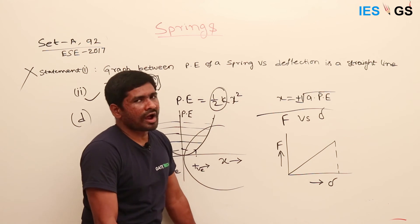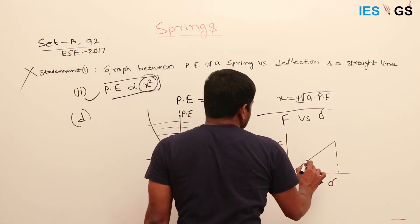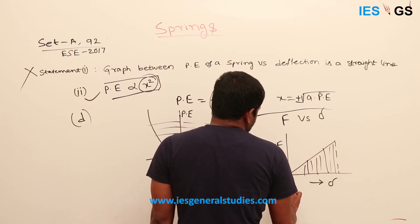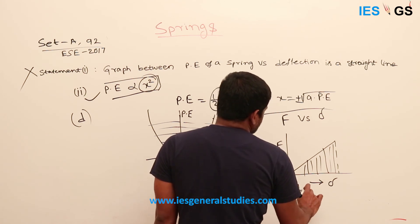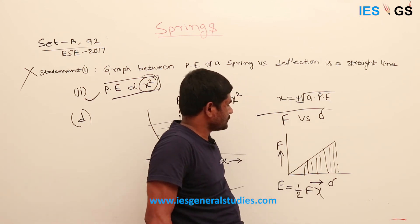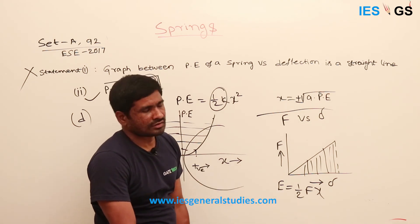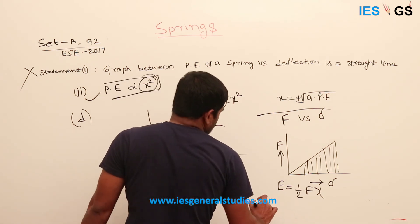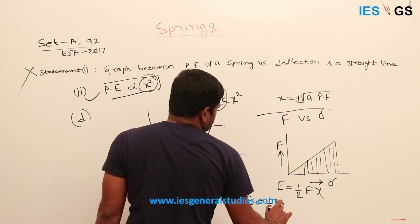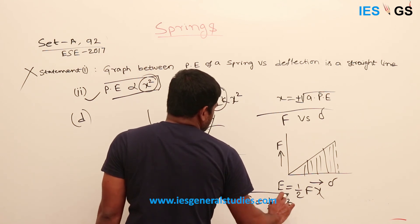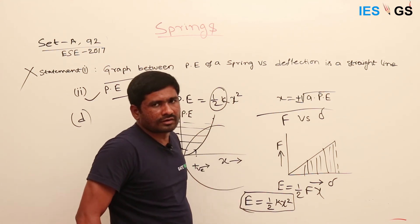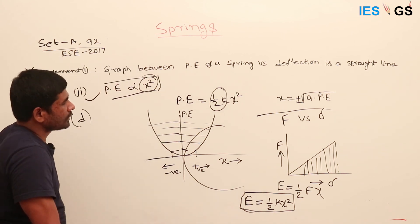A corrected Statement 2 could be: the area under the force vs. deflection graph gives the strain energy, which equals ½F·X. Substituting F = kX, this becomes ½kX², which is equivalent to the potential energy. So both corrected statements would be correct together.